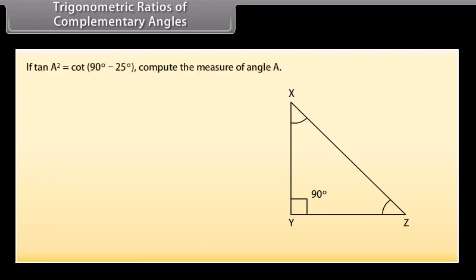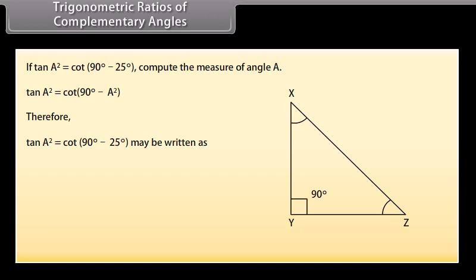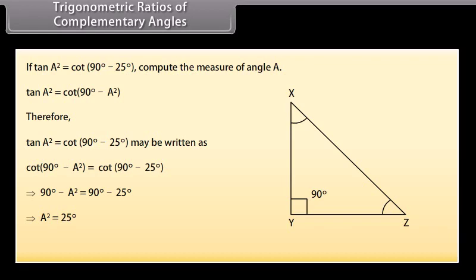Let us attempt one more question. If tan(A²) = cos(90° − 25°), compute the measure of angle A. Since tan(A²) = cos(90° − A²), we can write cos(90° − A²) = cos(90° − 25°). It implies that 90° − A² = 90° − 25°. In other words, A² = 25°, therefore A = 5°.